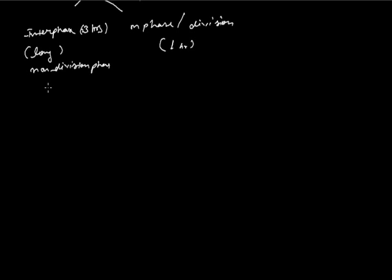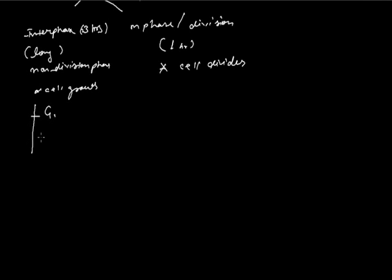In the interphase, the cell grows in size. In M phase, the cell divides. The interphase is further divided into three parts: the first is G1, the second is S phase, and the third is G2 phase.